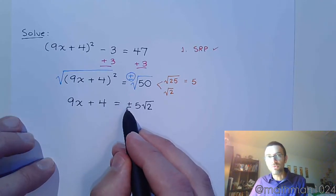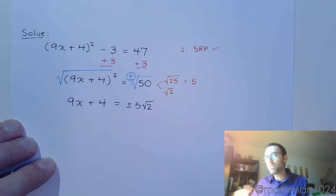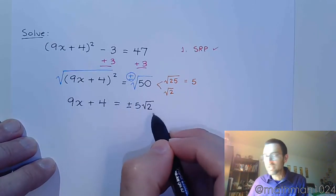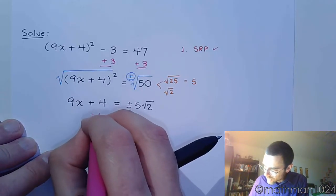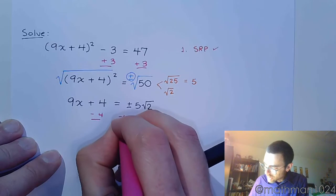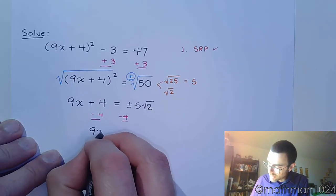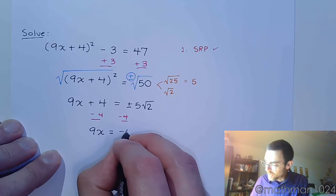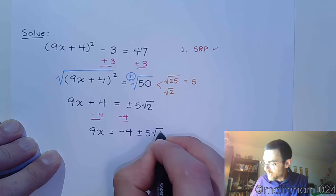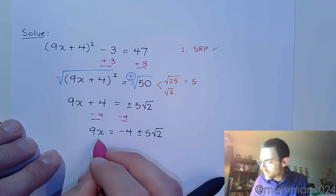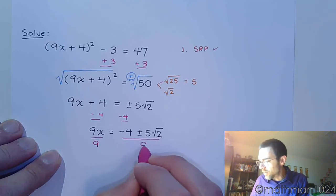So, this becomes plus or minus 5 times the square root of 2. Remember, the plus or minus goes in front of whatever you simplify out of this. So, it's not 5 plus or minus the square root of 2. It's plus or minus 5 times the square root of 2. And then we just take our little steps to finish getting x by itself. So, 9x is equal to negative 4 plus or minus 5 square root of 2. And the final step for isolating x is to divide by its coefficient.